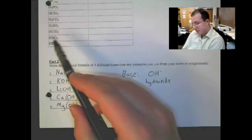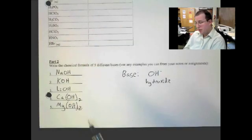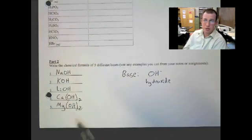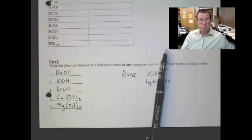So remember. Acid has an H out front. There's a bunch of different types. You figure that out. Bases have hydroxide usually at the end. So, hope that helps.